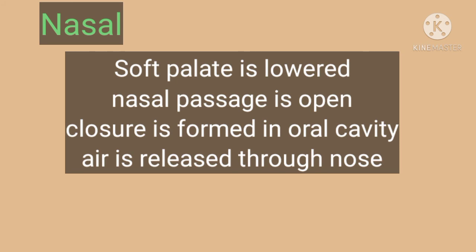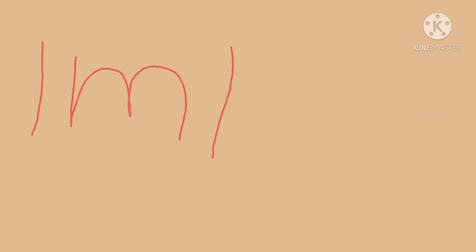Nasal. During the production of nasal sounds, the soft palate is lowered so that the nasal passage is open, a closure is formed in the oral cavity, and the air is released through the nasal cavity. Therefore the sounds are called nasal. M, N, and ng are the three nasal sounds in English, and all three are voiced. M is voiced bilabial nasal, N is voiced alveolar nasal, and ng is voiced velar nasal.